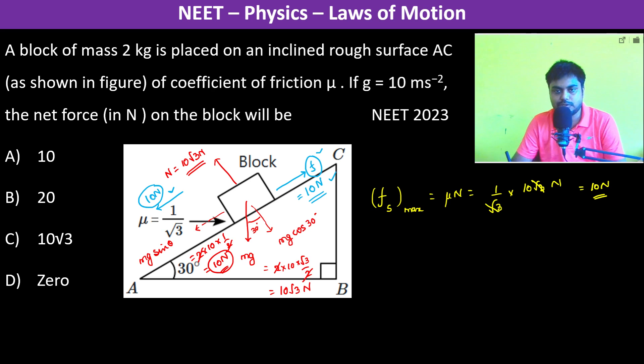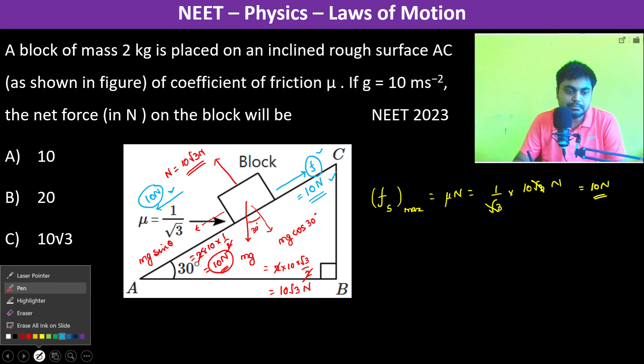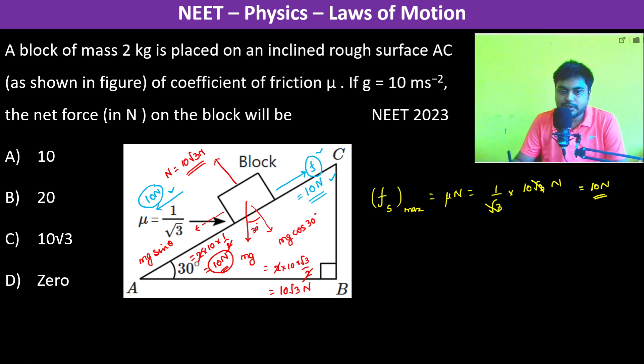So therefore friction applied is 10 Newton. So the net force in both the directions: F net, net force in x direction, along the incline this becomes 10 Newton minus 10 Newton because balance, so therefore 0 Newton.